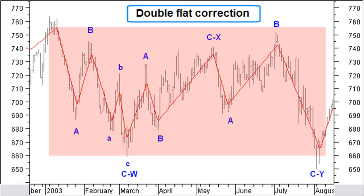Just like with the zigzag, we have flat correction variants with a double and a triple flat correction. A double flat correction is quite common, but a triple flat correction is rare. A double flat correction is composed of 2 flat corrections connected via a correction pattern; a triple flat correction is composed of 3 flat corrections connected via correction patterns. We use W, X, Y to denote a double flat correction instead of the standard ABC, X, ABC Elliott notation. This is more consistent because more flat corrections of a lower order are connected together by a higher order wave. In a double flat correction, waves W, X, and Y are any correction pattern except a triangle or a double or triple pattern.